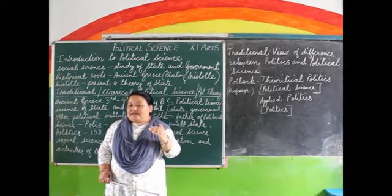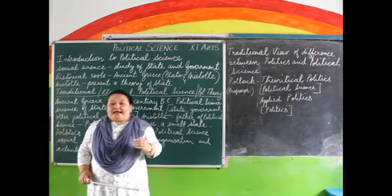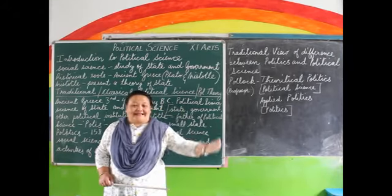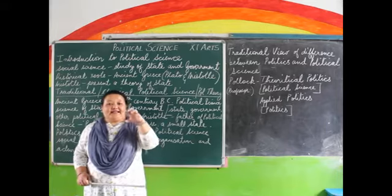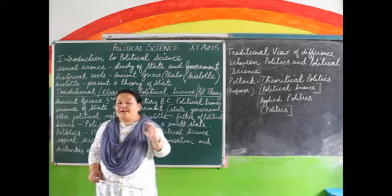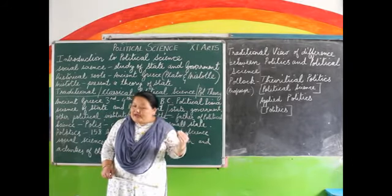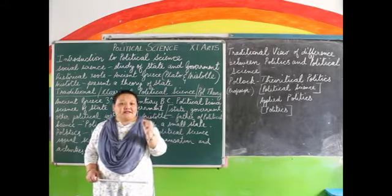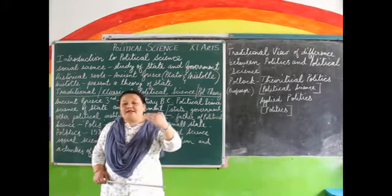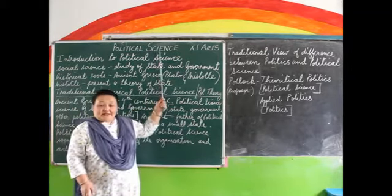So more or less, now you have an idea about what political science is. You also have to remember that the credit of the study of political science goes back to Greece — the root of political science is in Greece. There were two political philosophers by the name of Plato and Aristotle who came up with the idea of the study of state. Aristotle was the first individual who came up with the theory of state.